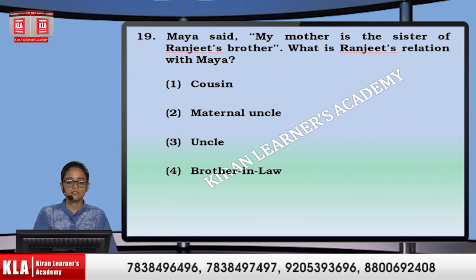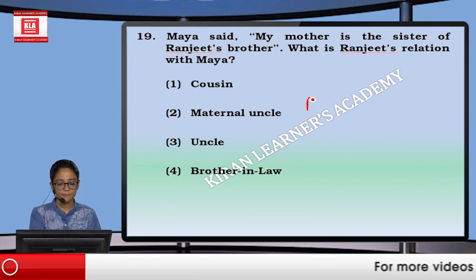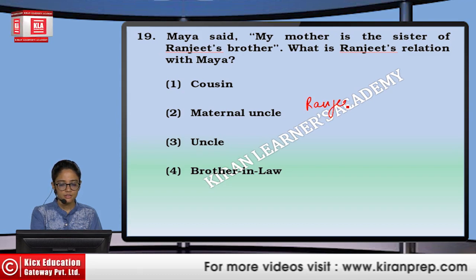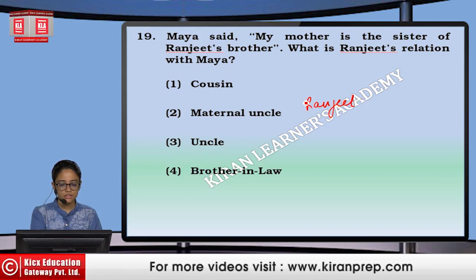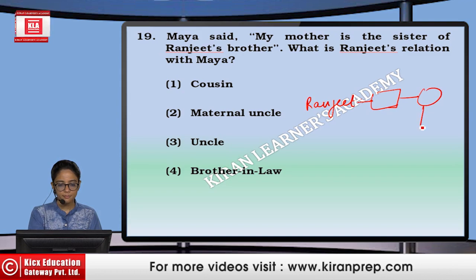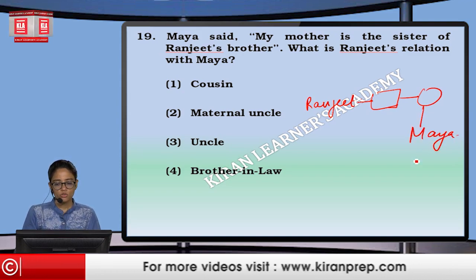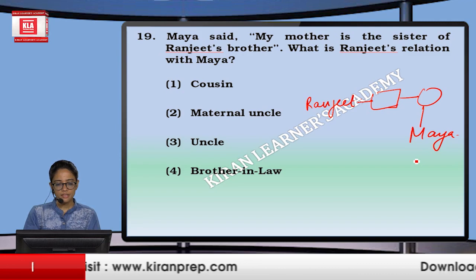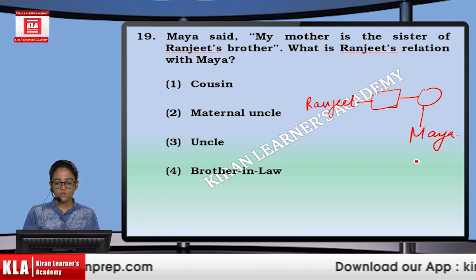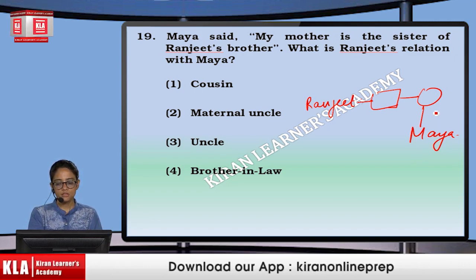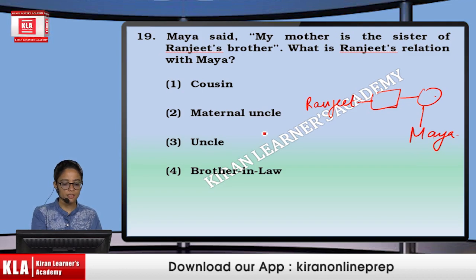Next: Maya said my mother is the sister of Ranjit's brother. Ranjit's brother's sister is Maya's mother. How is Ranjit related to Maya? He is mother's brother, which will be maternal uncle. That means option number second.